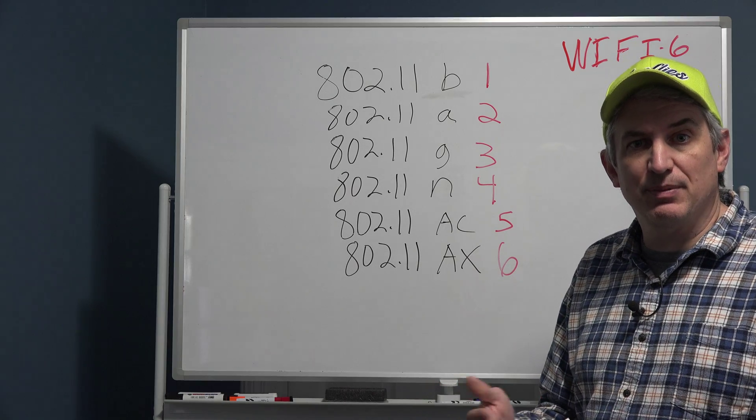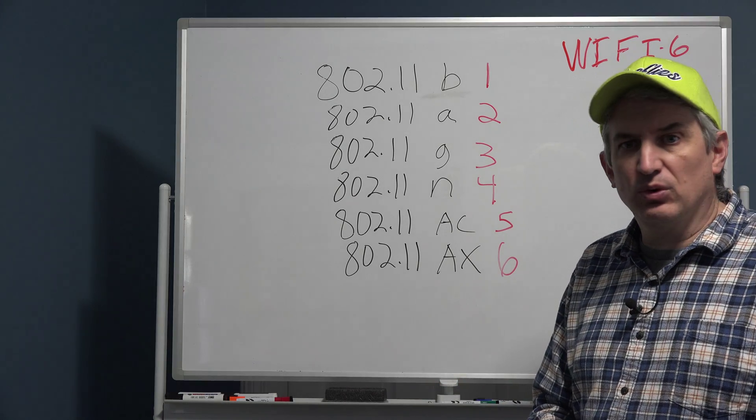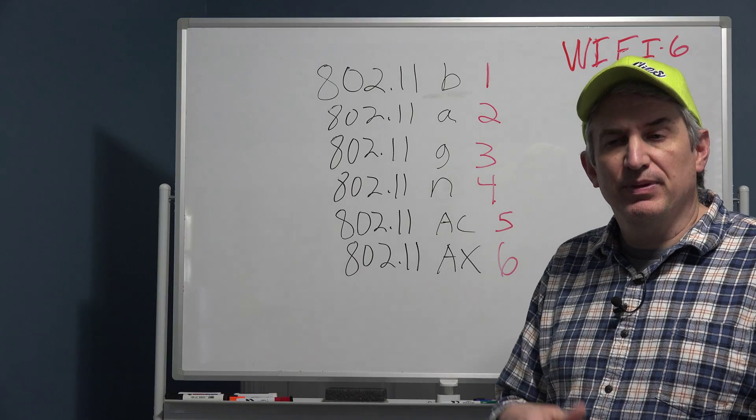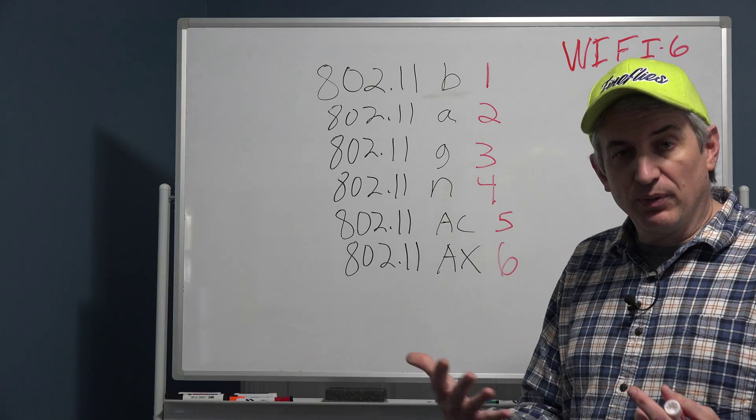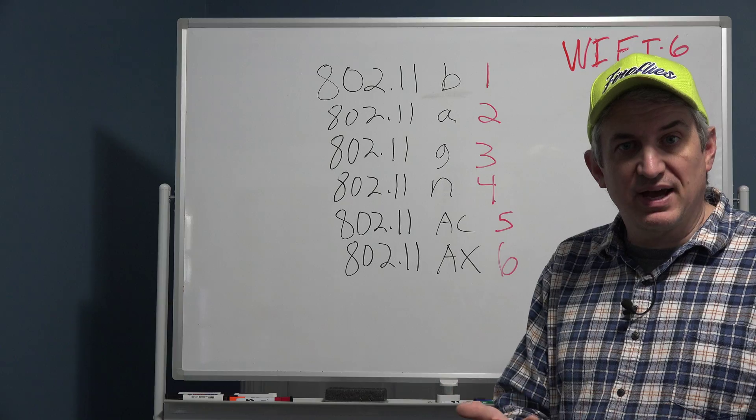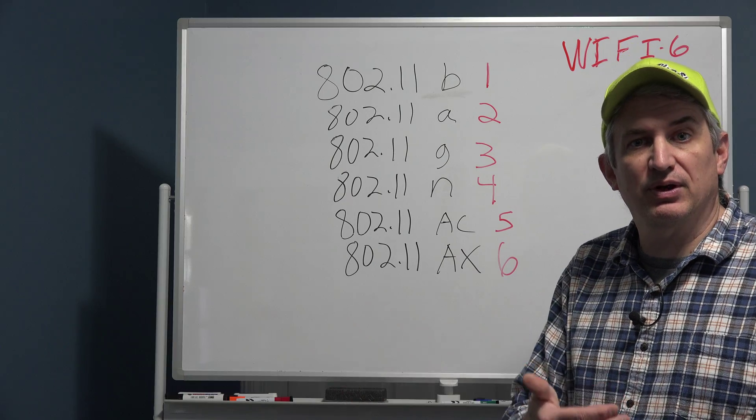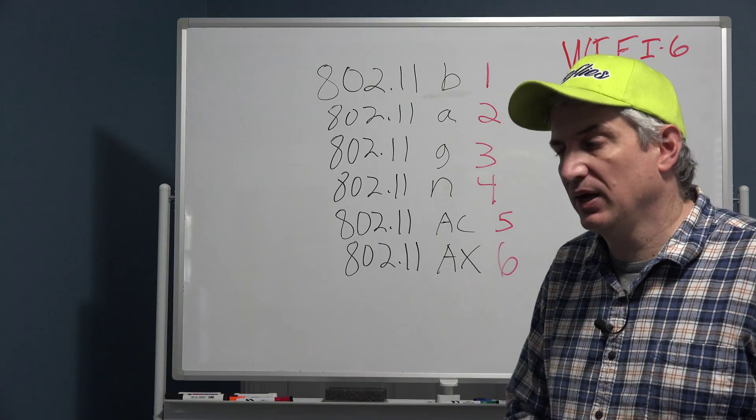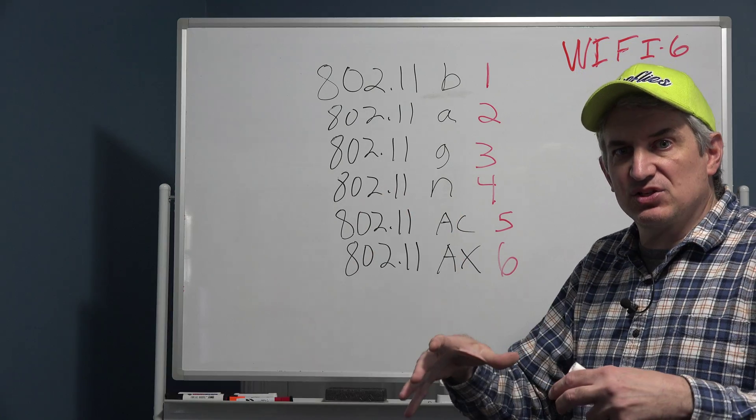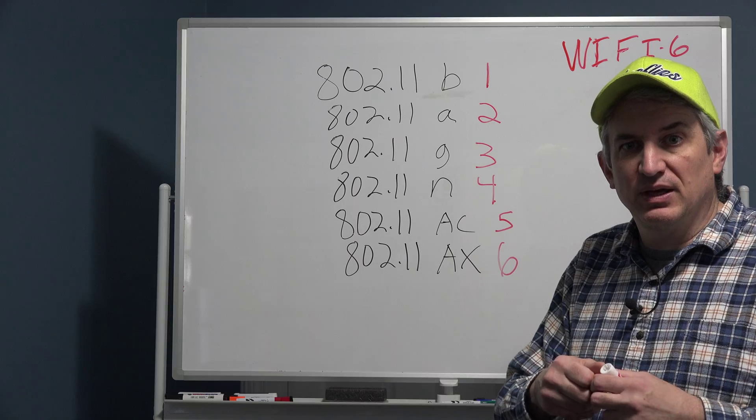The way WiFi has worked in the past is sort of like a dealer at a blackjack table. The router can only talk to one device at a time. At least each radio on the router can only talk to one device at a time. So if 10 devices are hammering it for information, it's like a blackjack dealer dealing out that information one at a time, but really really fast.